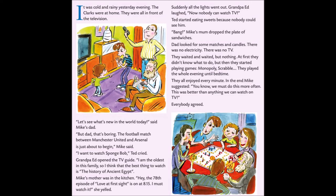Mike's mother was in the kitchen. Hey, the 78th episode of Love at First Sight is on at 8.15. I must watch it, she yelled. Suddenly, all the lights went out. Grandpa Ed laughed. Now nobody can watch TV. Ted started eating sweets because nobody could see him. Mike's mum dropped the plate of sandwiches. Dad looked for some matches and candles. There was no electricity. There was no TV. They waited and waited, but nothing. At first they didn't know what to do, but then they started playing games — Monopoly, Scrabble. They played the whole evening until bedtime. They all enjoyed every minute. In the end, Mike suggested, you know, we must do this more often. This was better than anything we can watch on TV. Everybody agreed.